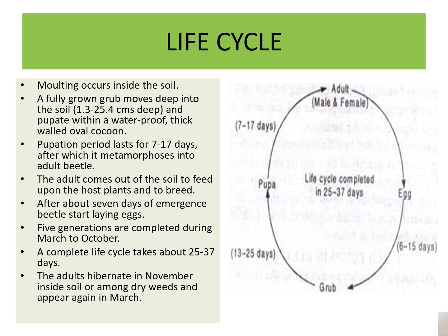The pupation period lasts 7 to 17 days, after which it metamorphoses into an adult beetle. The adult comes out of the soil to feed upon the host plant and to breed. After about 7 days of emergence, the beetle starts laying eggs. Five generations are completed during March to October, and a complete life cycle takes about 25 to 37 days. Adults hibernate in November inside the soil and among dry weeds, appearing again in March.